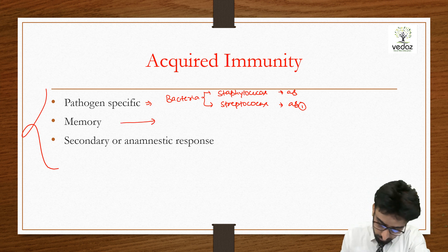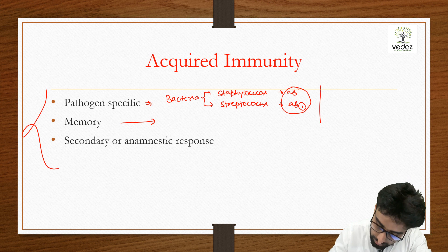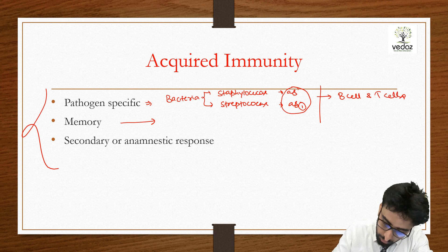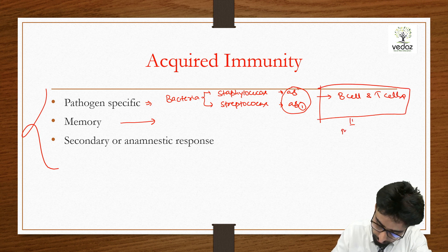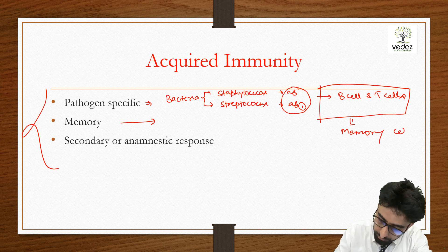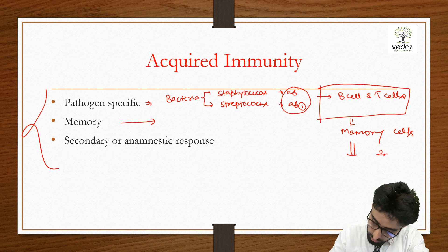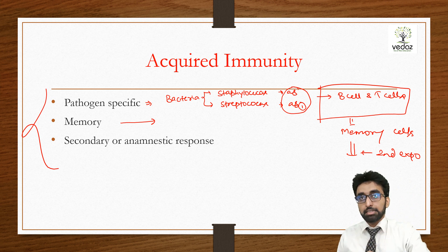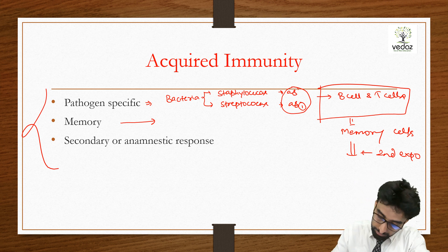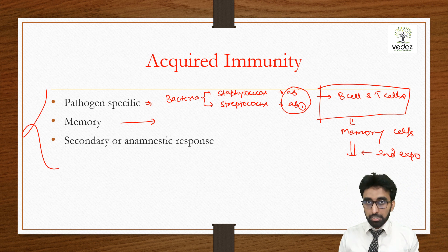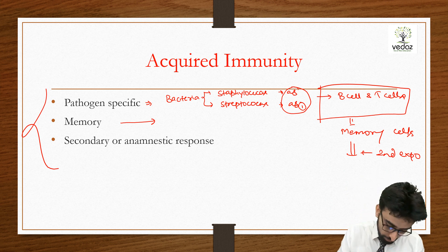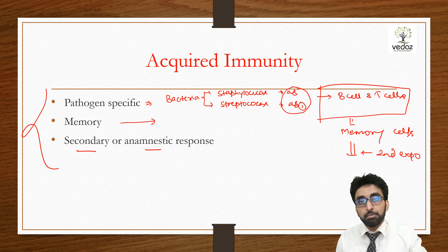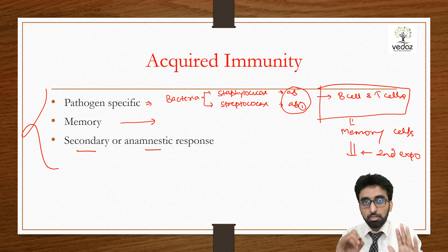Now, what is memory? The B cells and T cells involved in making antibodies also create memory cells. These memory cells, when the second exposure occurs — when the same antigen enters the body again — will tell the body that we have already tackled this infection and we know how to handle it. This leads to a secondary or anamnestic response. Memory cells are responsible for this secondary or anamnestic response.